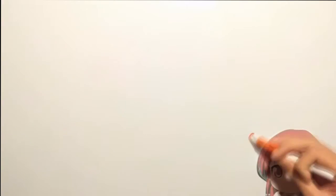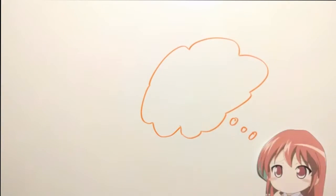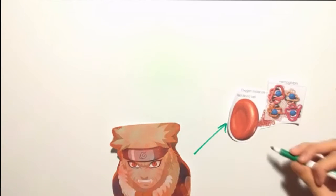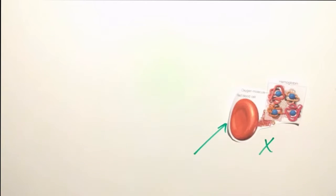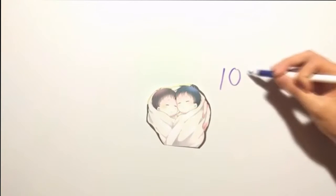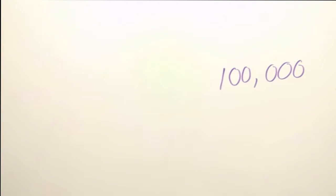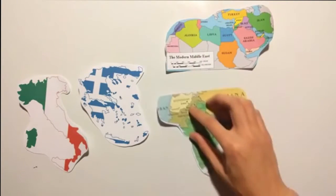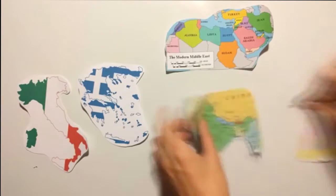For my genetics project, I chose thalassemia. So what is thalassemia? Thalassemia is a group of inherited blood disorders that affect the person's ability to produce hemoglobin, resulting in anemia. If some of you don't remember, hemoglobin is a protein in red blood cells that carries oxygen and nutrients to cells in the body. About 100,000 babies are born with thalassemia worldwide, which occurs frequently in people of Italian, Greek, Middle Eastern, Southern Asian, and African ancestry.